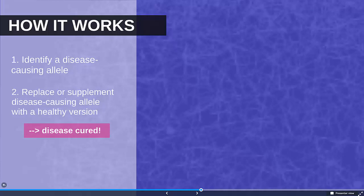First you have to identify a disease-causing allele. Remember an allele is a specific version of a gene and then you have to replace or supplement the disease-causing allele with a healthy version and then ideally the disease is completely cured.